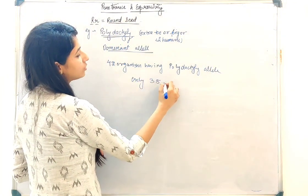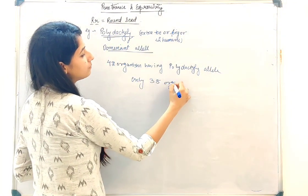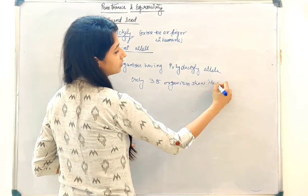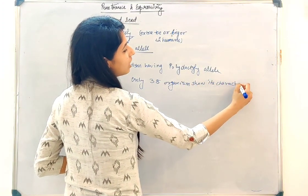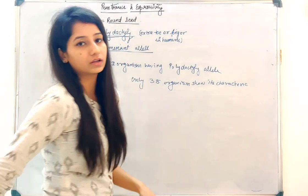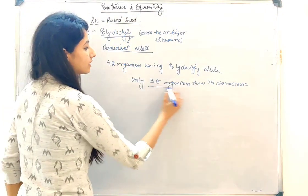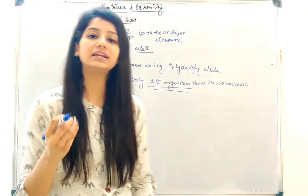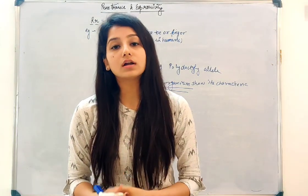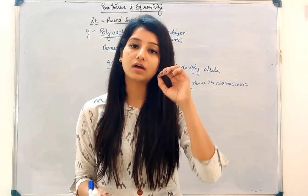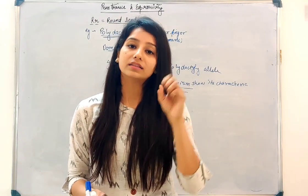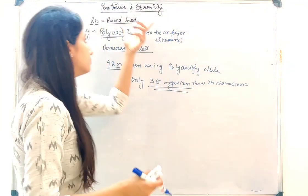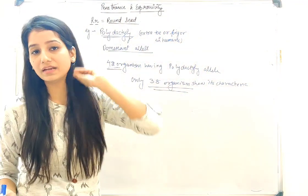only 38 organisms show the characteristic, that is the extra toe or extra finger. So only 38 organisms are showing it; the rest of the 4 organisms are not showing polydactyly. So it is not compulsory that if we have an allele, then it will always express itself. This is what penetrance says.